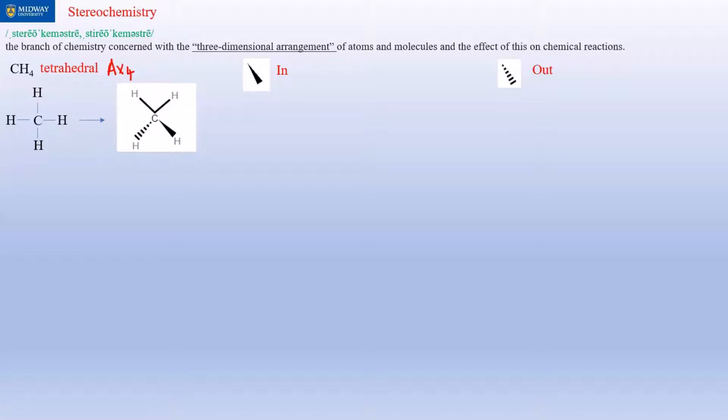That's exactly what's happening here because methane has four hydrogens. The two regular bond lines are usually in plane—these are in the plane of the paper. This is coming into the plane, this is coming out of the plane.